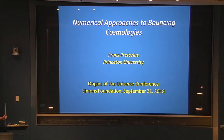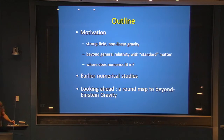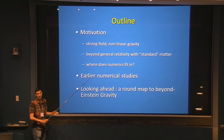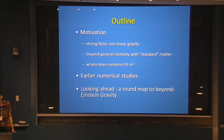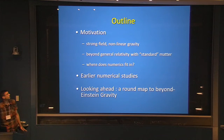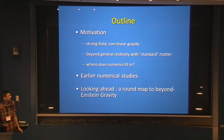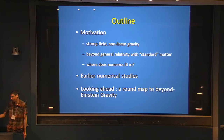I'm going to talk about the numerical approaches to bouncing cosmologies. Here's a rough outline of my talk. I'll first try to motivate why we might want to use numerical methods — essentially because we're tackling regions in gravity, whether Einstein gravity or beyond Einstein gravity, which is well within the nonlinear regime of the theory. I'll then spend time looking at two earlier studies done in the fully nonlinear regime for bouncing cosmologies, focusing on non-singular bouncing cosmologies as that's the focus of our program.